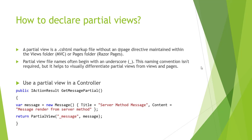Let's check how we can declare the partial view. There are a couple of ways we can define it. The first one is using a partial view in a controller. I have written a method called GetMessagePartial and I'm returning the partial view. I defined the message as a partial view with an underscore prefix, and I just pass in a message model that has two properties: title and content.